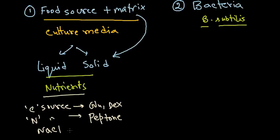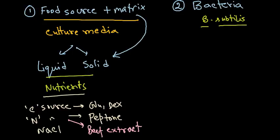To clarify: the nitrogen source should actually be beef extract. Beef extract is made from literally every part of the beef's body, dried and powdered, and it contains all the necessary proteins a bacteria requires to grow. In addition to beef extract, we also use peptone and a carbon source like glucose or dextrose — plus NaCl. This is the basic composition of a simple media.